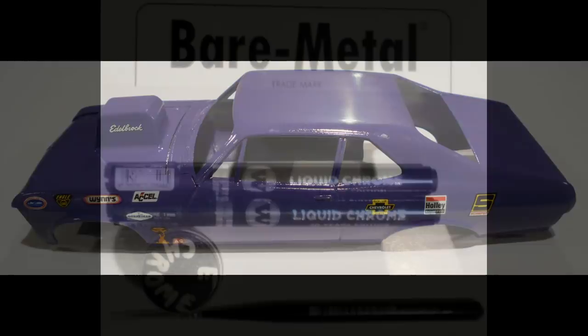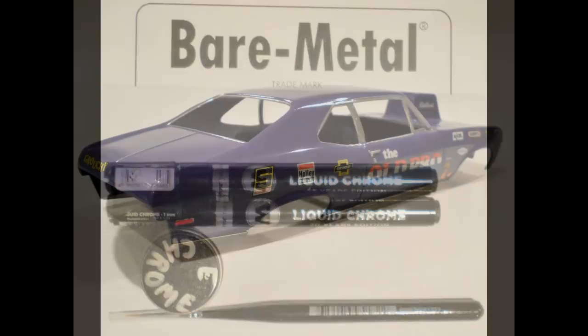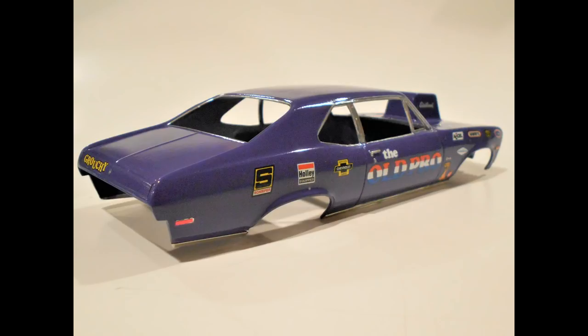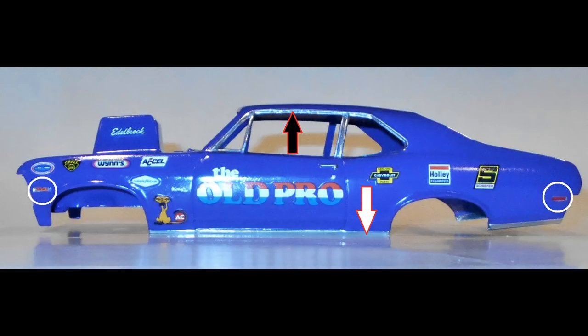I used a variety of items to accent the trim, including some of the liquid chrome pens, regular paint in a brush, and some bare metal foil. Most of the trim is done with the chrome pens, except in the very corners where you can't get a chrome pen into those features. That's where I use some chrome paint to finish those edges.